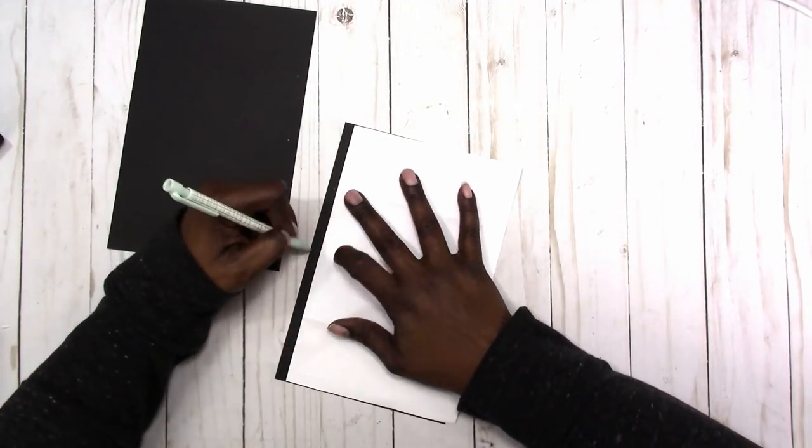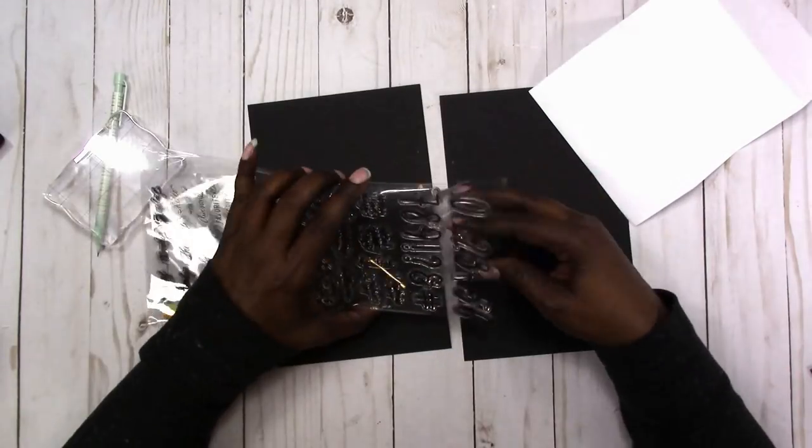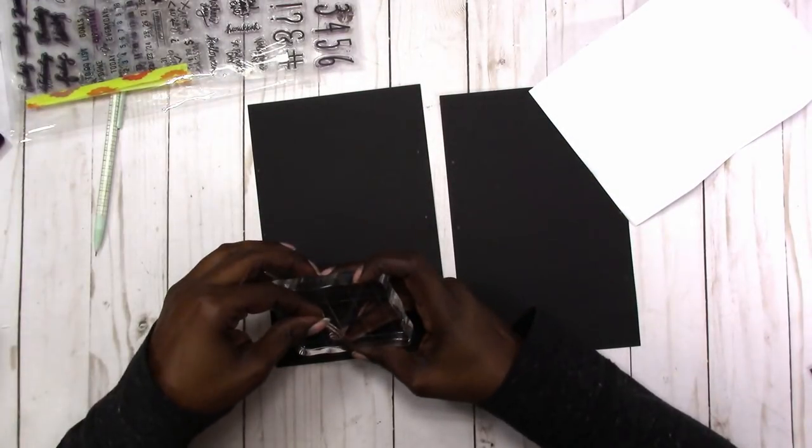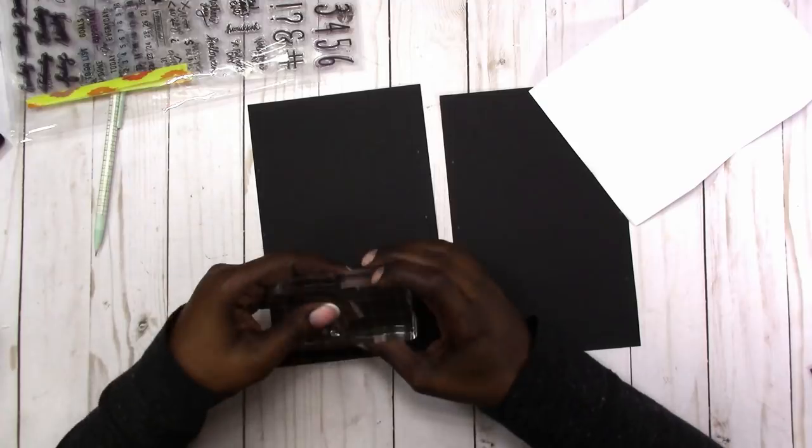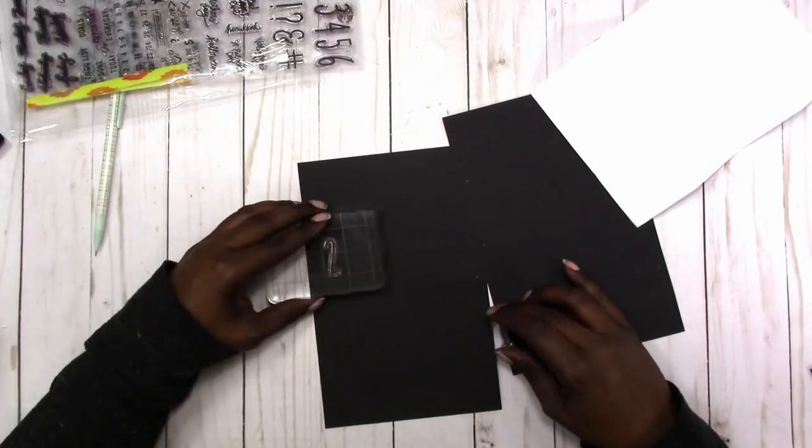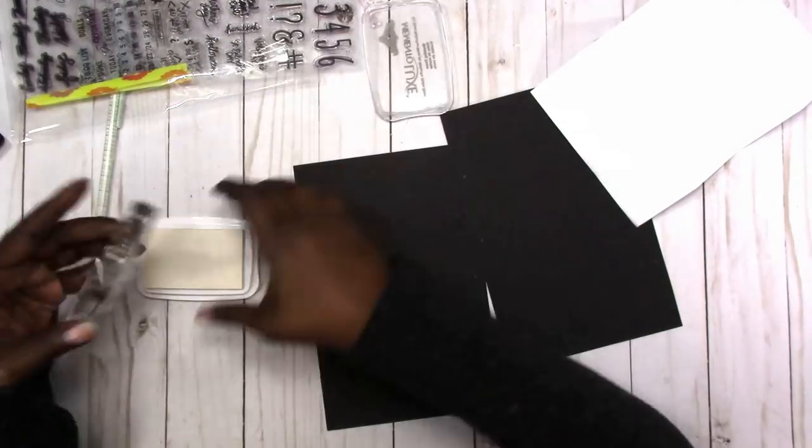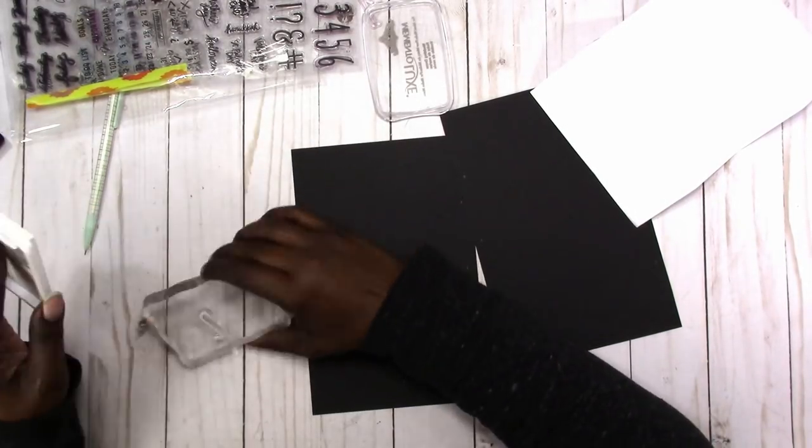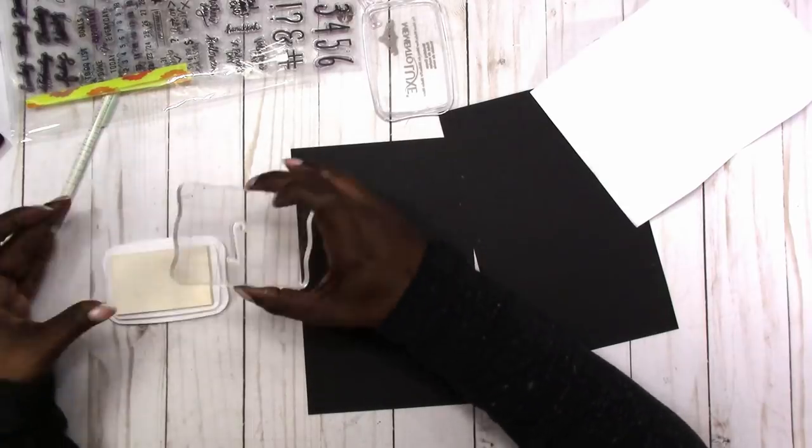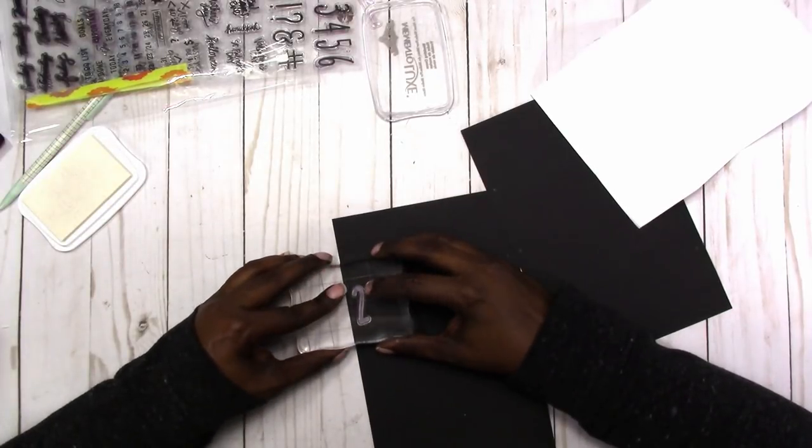I'm using the Mambi Happy Planner number stamps. It also has holidays included in the set, but these are my favorite date stamps that I use. I'm using Memento white ink to stamp the dates.